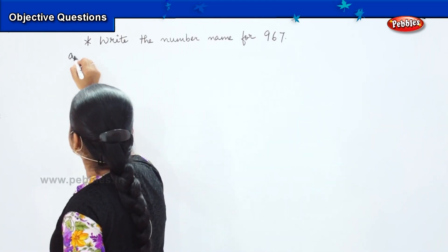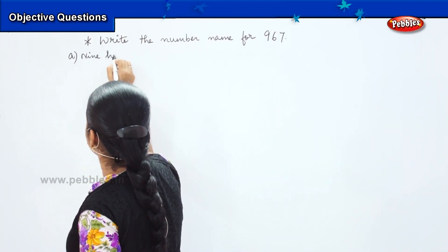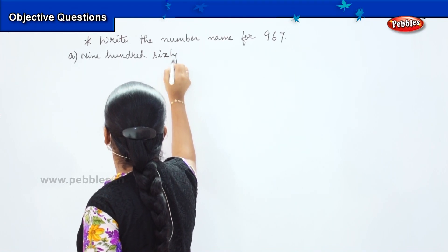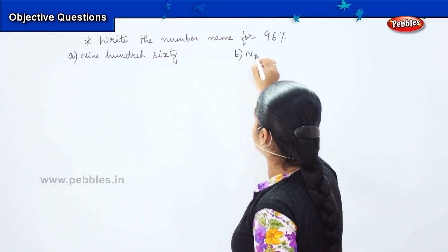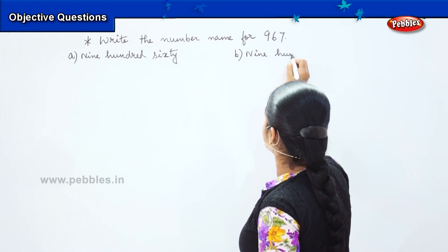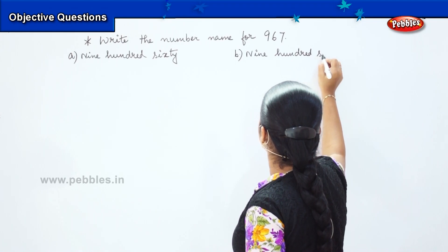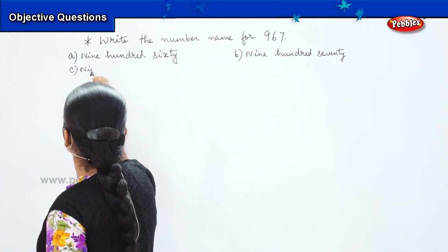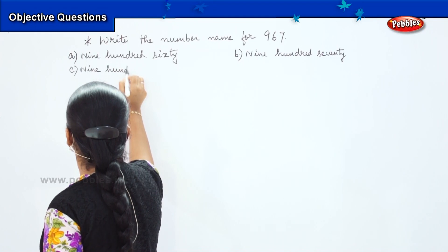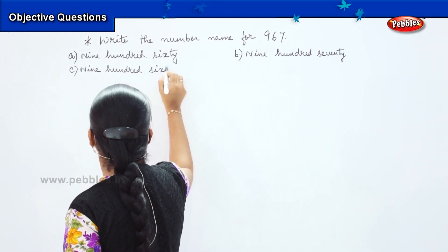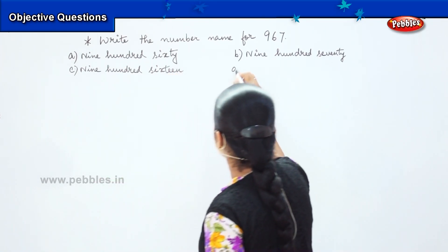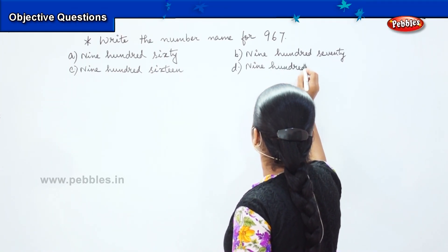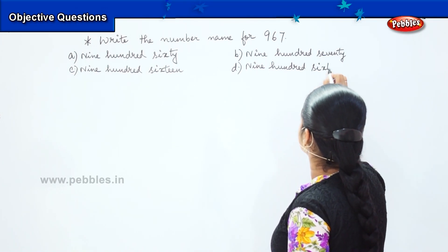The options are: option A is 960, option B is 970, option C is 960, and option D is 967.